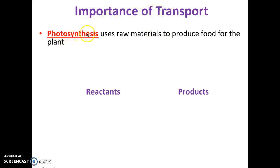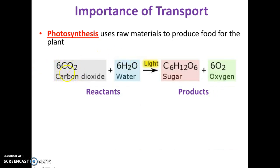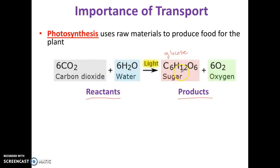The importance of transport: photosynthesis is one of the main reasons why transport in plants is very important. Photosynthesis is going to use raw materials to produce food for the plant. Those raw materials come in the form of carbon dioxide from the atmosphere, water from the soil, and sunlight from the sun, and that's going to produce sugar — specifically glucose, which is a carbohydrate. Plants are also going to be making oxygen. So carbon dioxide and water are the reactants, and sugar and oxygen are the products.